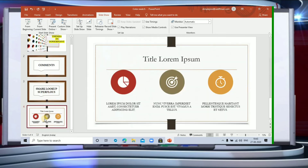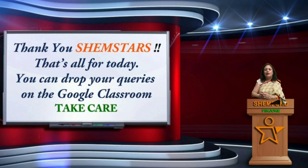One more important thing is rearranging slides. You can reorder slides in normal view by selecting thumbnails in the slide navigation pane and dragging them to the desired position. In slide sorter view, I already showed you how to do that. In outline view, you can select the thumbnail from the outline pane and drag it to the desired location — a horizontal line appears as you drag the slide. I hope this is clear. Thank you Shemstars — drop any queries in Google Classroom. Take care and God bless you all.